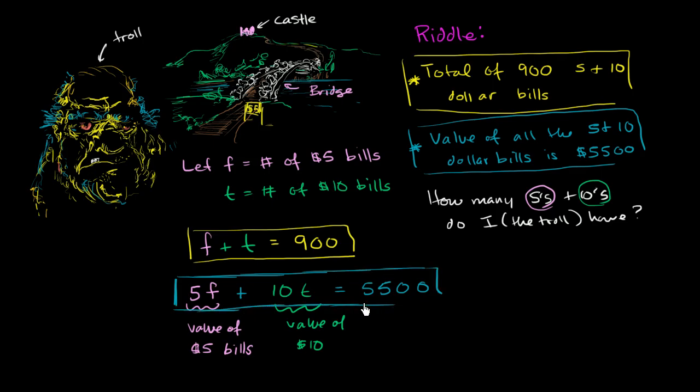And what we essentially have right over here, we have two equations. Each of them have two unknowns. And just using one of these equations, we can't really figure out what f and t are. You can pick a bunch of different combinations that add up to 900 here. You could pick a bunch of different combinations where if you work out all the math, you get 500, 5,500 here. So independently, these equations, you don't know what f and t are.